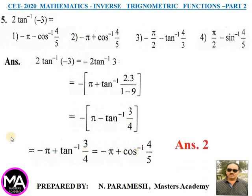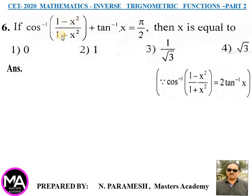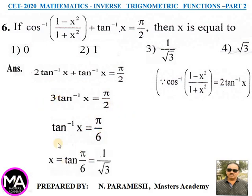Question 6: If cos⁻¹[(1−x²)/(1+x²)] + tan⁻¹x = π/2, find x. Answer: cos⁻¹[(1−x²)/(1+x²)] = 2tan⁻¹x, so substituting: 2tan⁻¹x + tan⁻¹x = π/2, giving 3tan⁻¹x = π/2, tan⁻¹x = π/6, therefore x = tan(π/6) = 1/√3. Option 3 is correct.